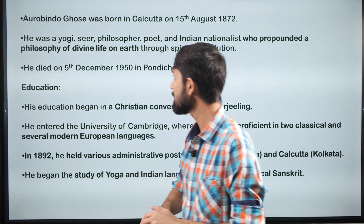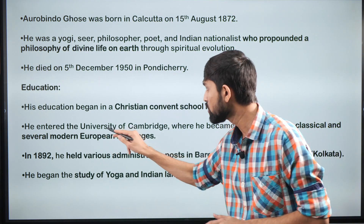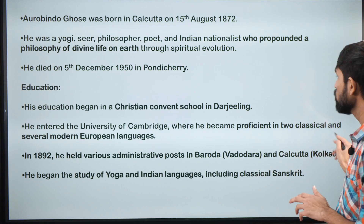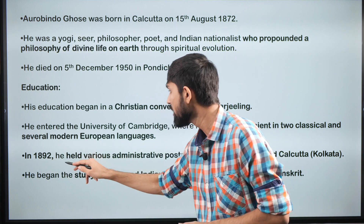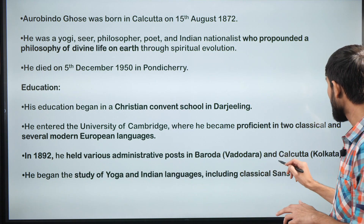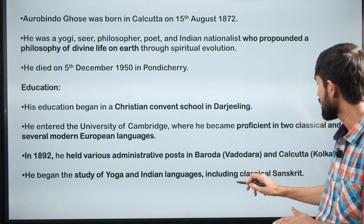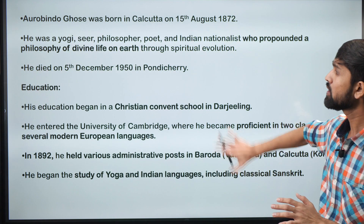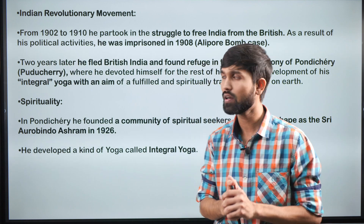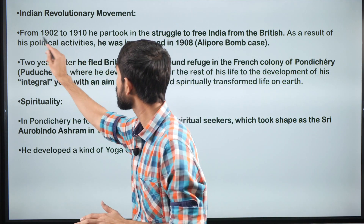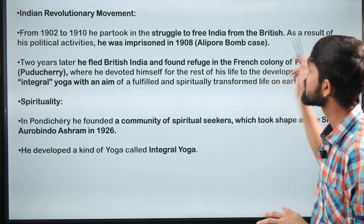His education began in the Christian Convent School in Darjeeling, and he later entered the University of Cambridge where he became proficient in two classical and several modern European languages. In 1892, he held various administrative posts in Baroda and Calcutta, and then began the study of yoga and Indian languages including classical Sanskrit. He then took part in the Indian revolutionary movement from 1902 to 1910, partaking in the struggle to free India from the British.